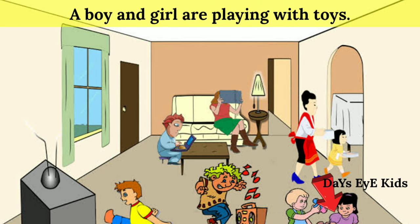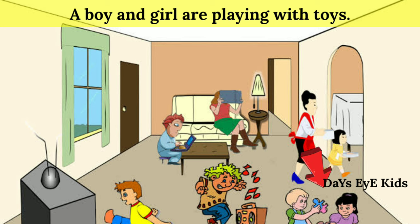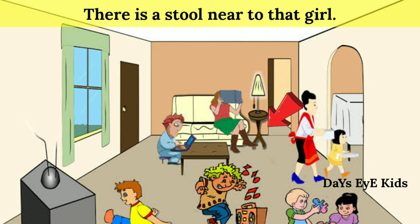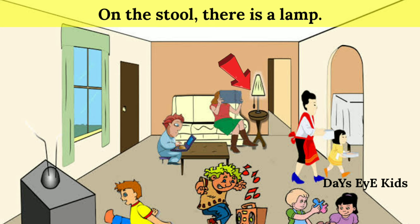A boy and girl are playing with toys. There is a girl reading a book. There is a stool near to that girl. On the stool there is a lamp.